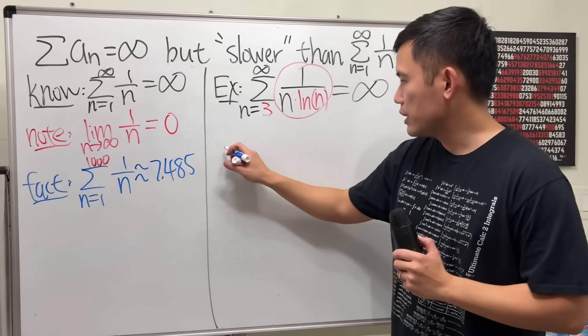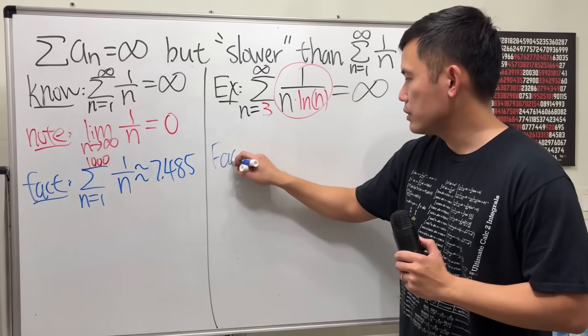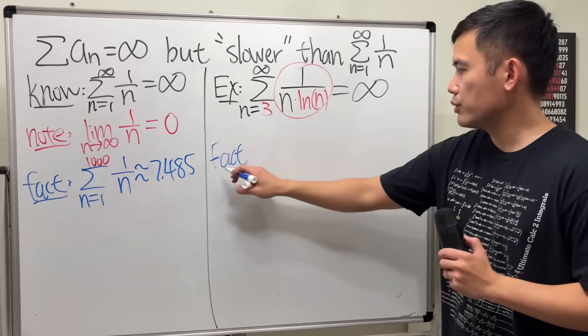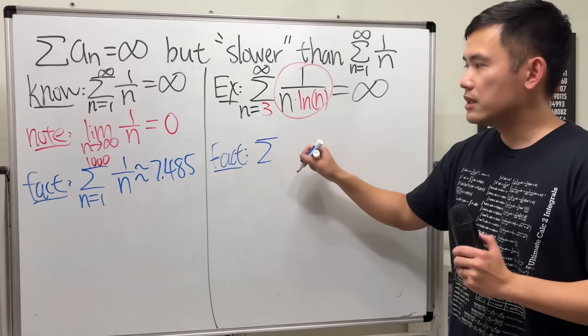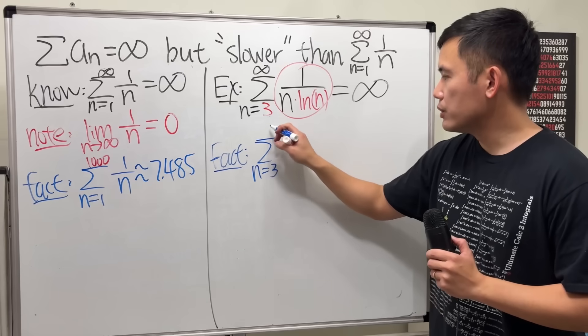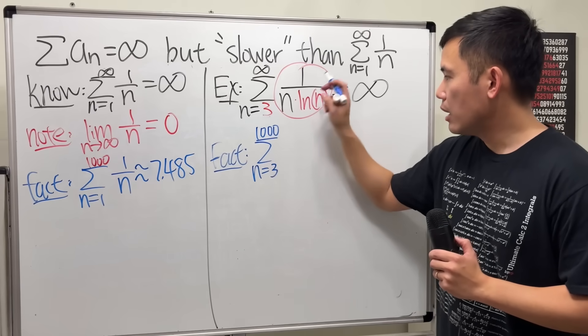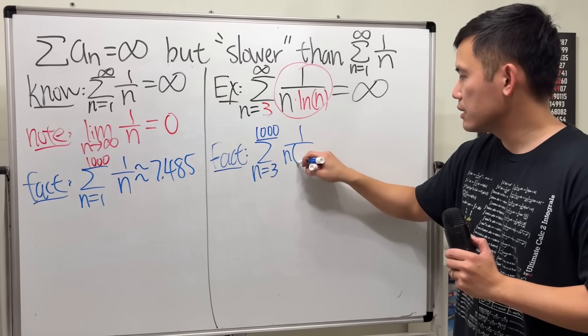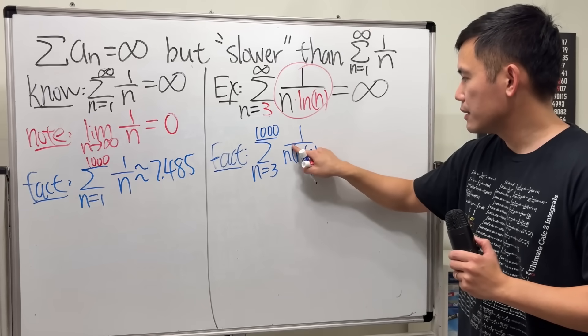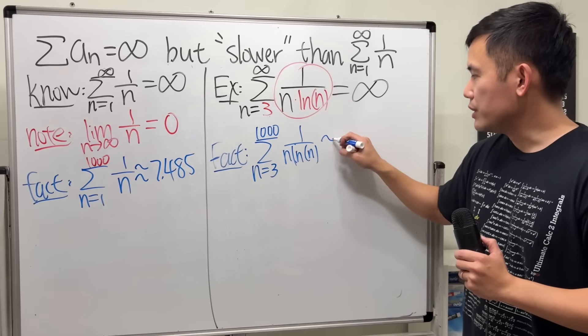So I'll give you the fact right here as well. You can use Wolfram Alpha to do the computation yourself. The idea is if we add as n goes from 3 to 1,000 of this series here...